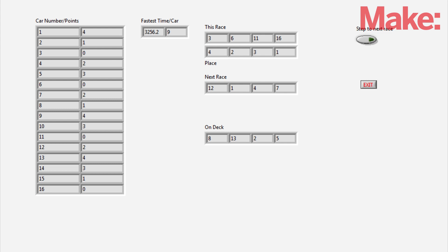In the middle column there, you see the fastest time and the car that posted it. And over to the right, you have this race, and the Alamode output would fill in the place that those cars achieved. The next race, and then, of course, on deck, so you can get things queued up and keep things going smoothly.